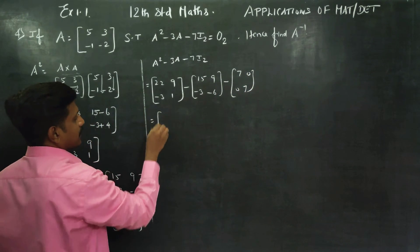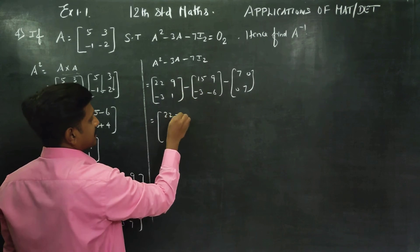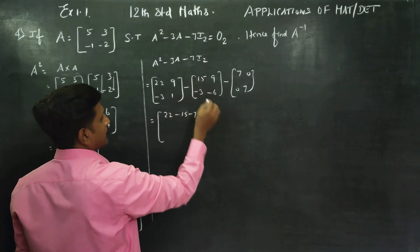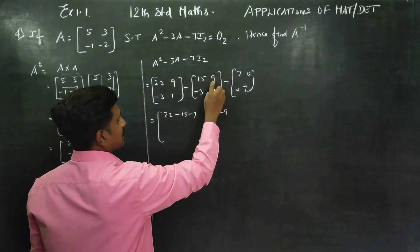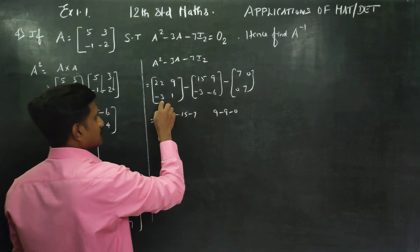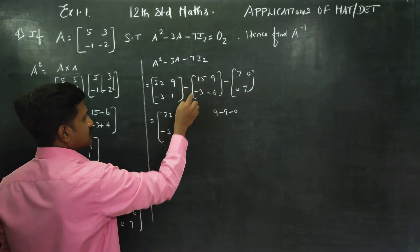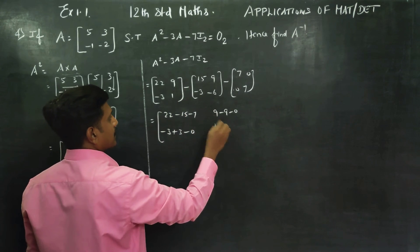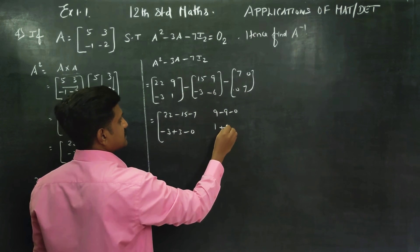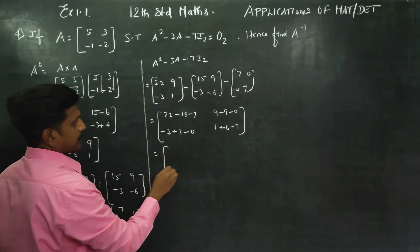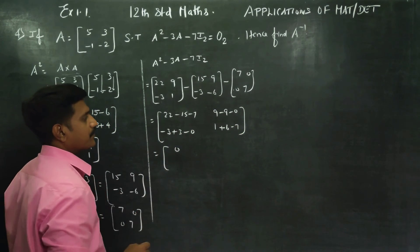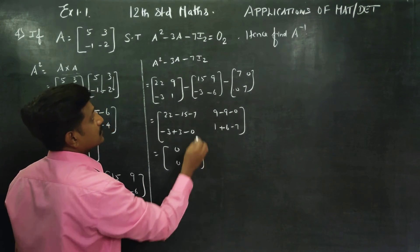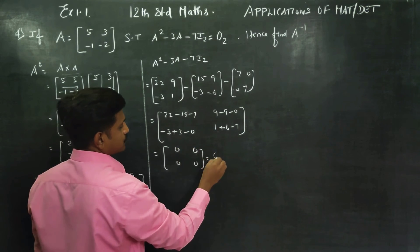Combining all: 22 - 15 - 7 = 0; 9 - 9 - 0 = 0; -3 + 3 - 0 = 0; 1 + 6 - 7 = 0. This gives your 2×2 zero matrix. Hence A² - 3A - 7I₂ = 0 is proved.